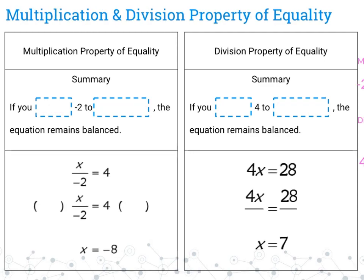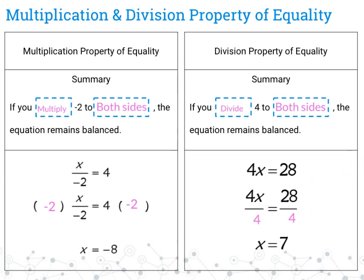The multiplication property of equality states that if you multiply both sides by the same value, the equation remains balanced. For example, multiplying both sides by negative 2 — the negatives cancel to give 1x, and 4 times negative 2 gives negative 8. The division property of equality states that if you divide both sides by the same value, the equation remains balanced. Dividing both sides by 4 gives 4 divided by 4 equals 1, so 1x, and 28 divided by 4 equals 7. That's what we're really talking about with the properties of equality — we want things to remain equal.